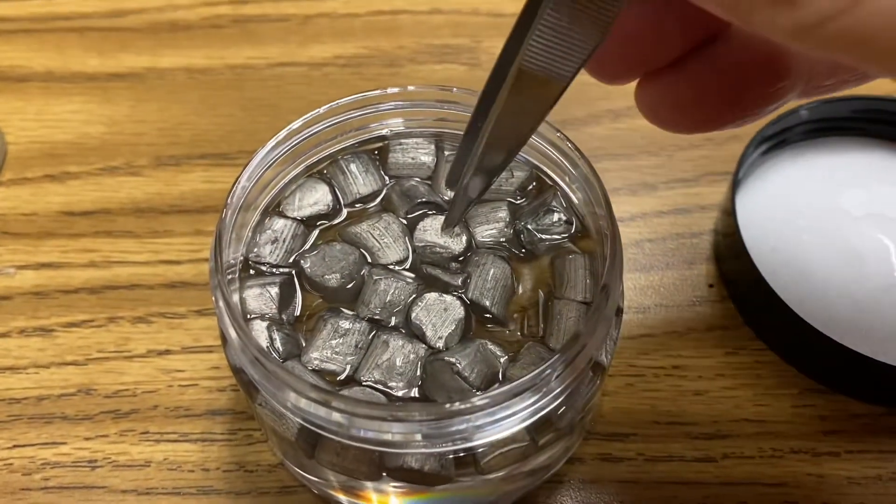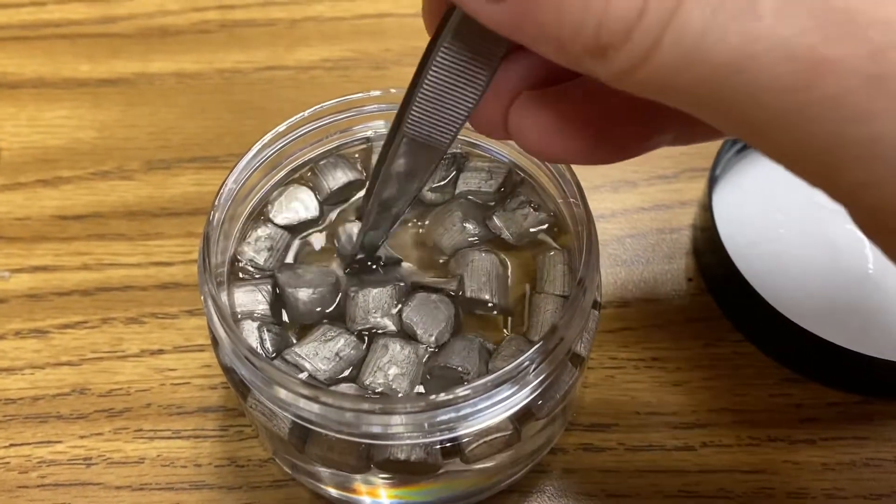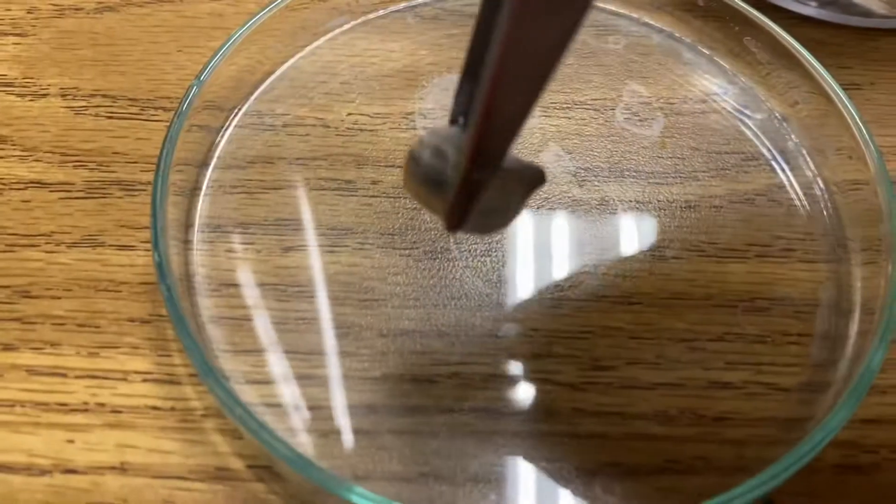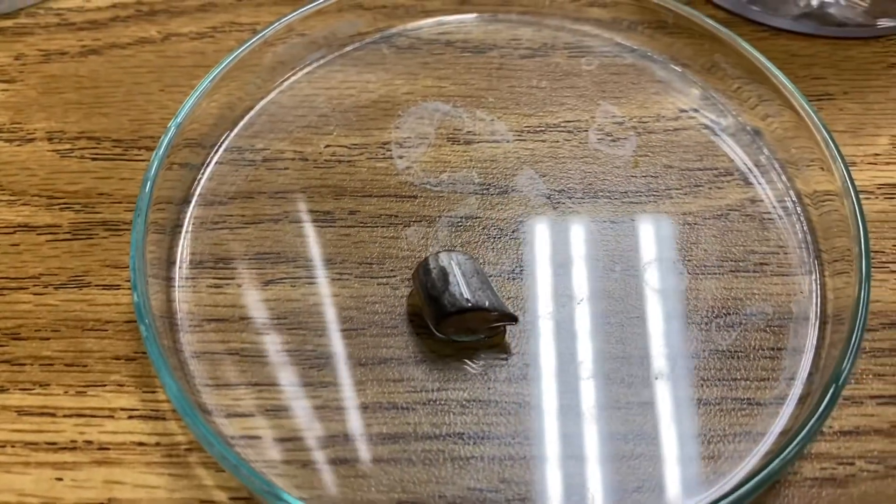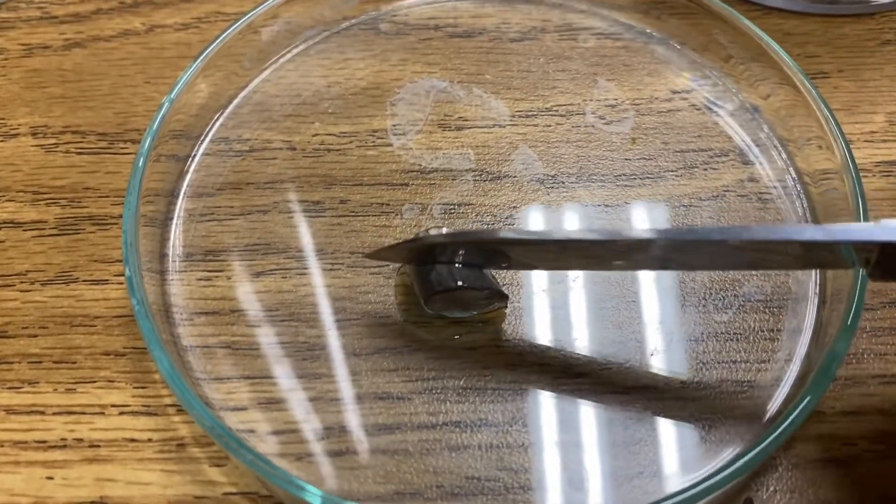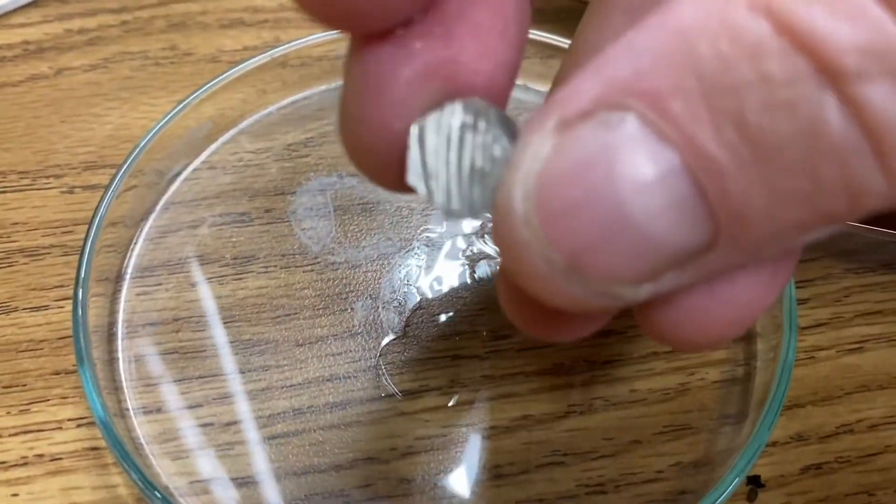Lithium is an alkali metal that's so soft you can cut it with a knife. Here's a small piece and when I cut it you'll see what it looks like beneath that oxide layer. Wow, look how shiny that is.